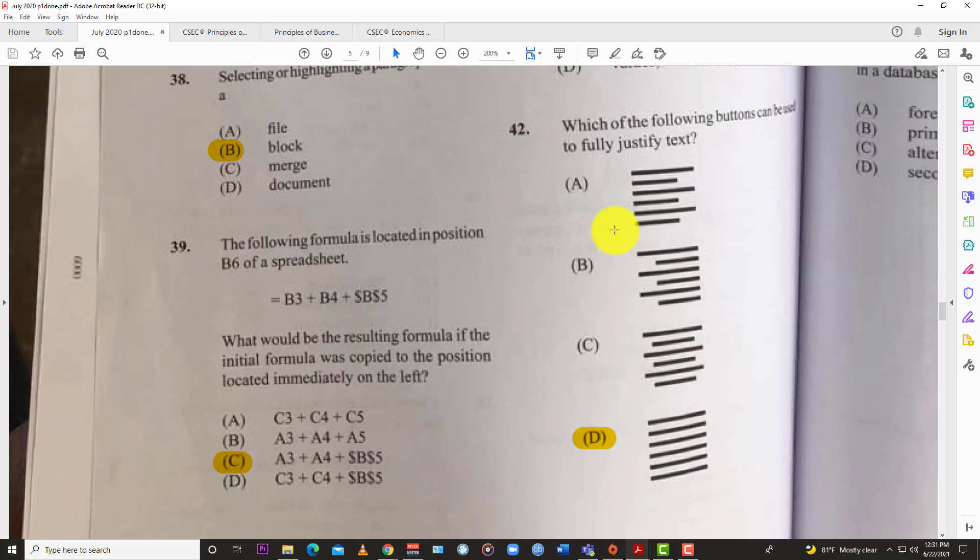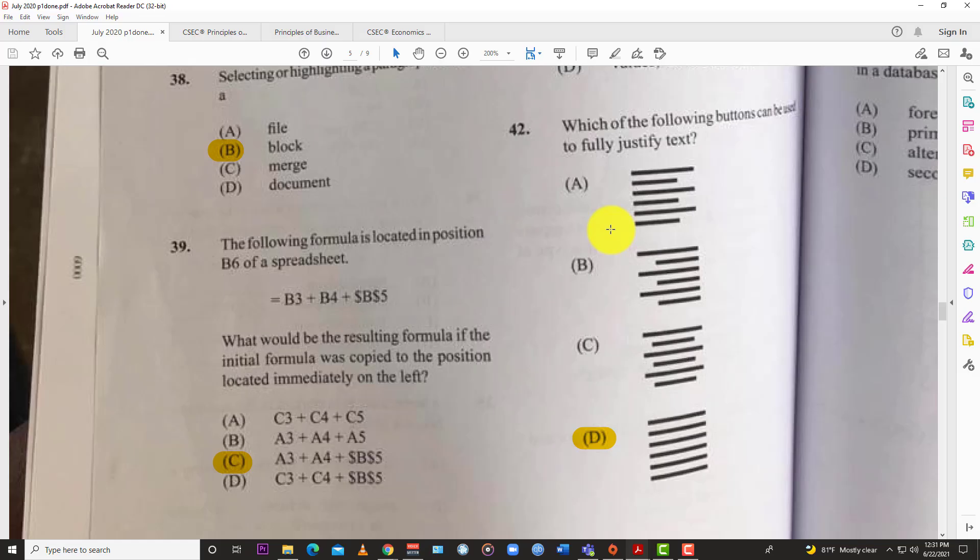Question 42: Which of the following buttons can be used to fully justify text? You have D, right? You're going to try to make it a nice block with all the words and everything, the lines are made the same length. If it was B, that would be right align, A would be left, and C would be centered. So D is for justifying the text.